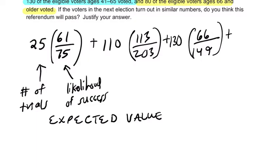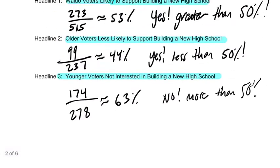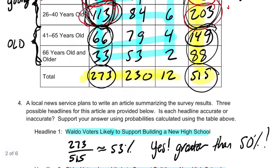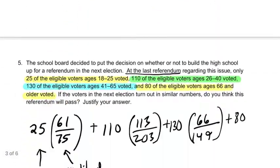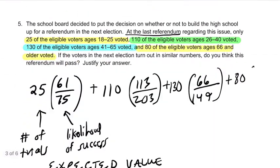And then finally, the last age group — we've got 80 voters. How likely are they to say yes? Well, 33 out of 88 — less than half. So 33 out of 88. And this is just an estimate. You put all this together, and I believe you get 160-something.